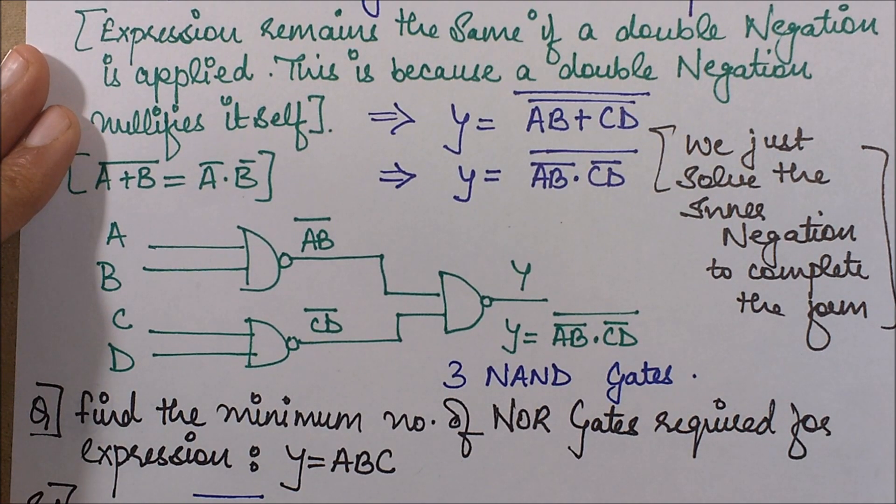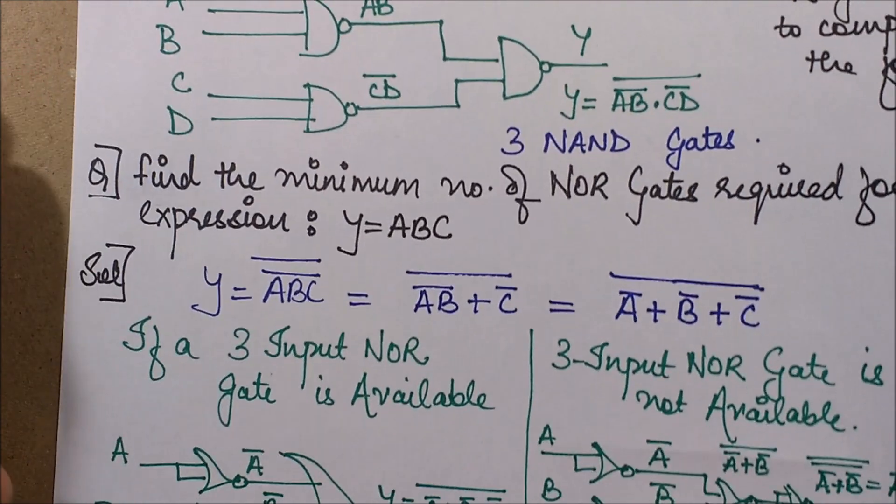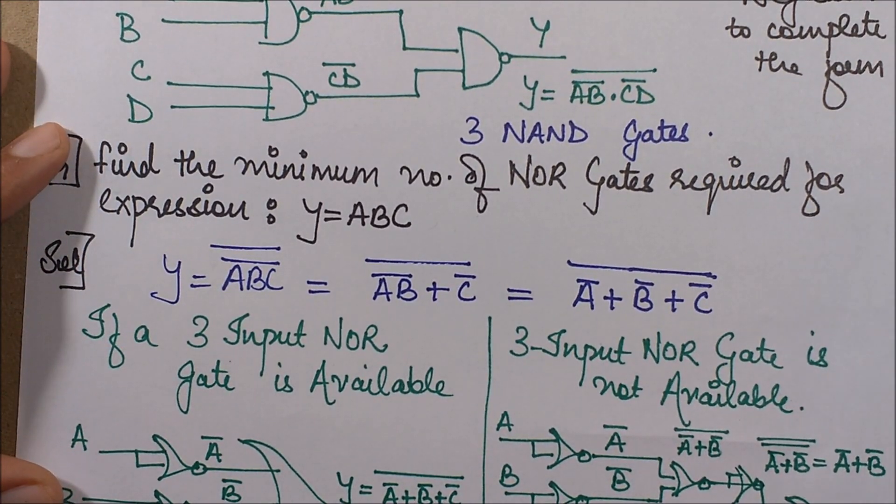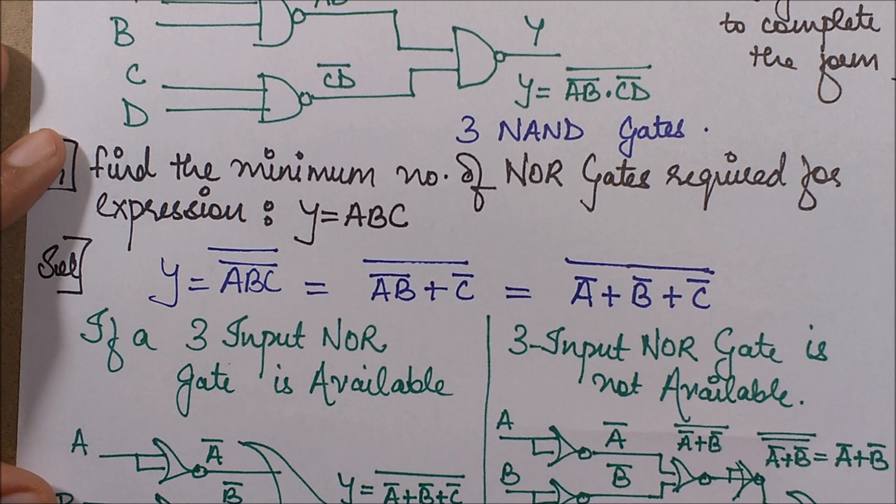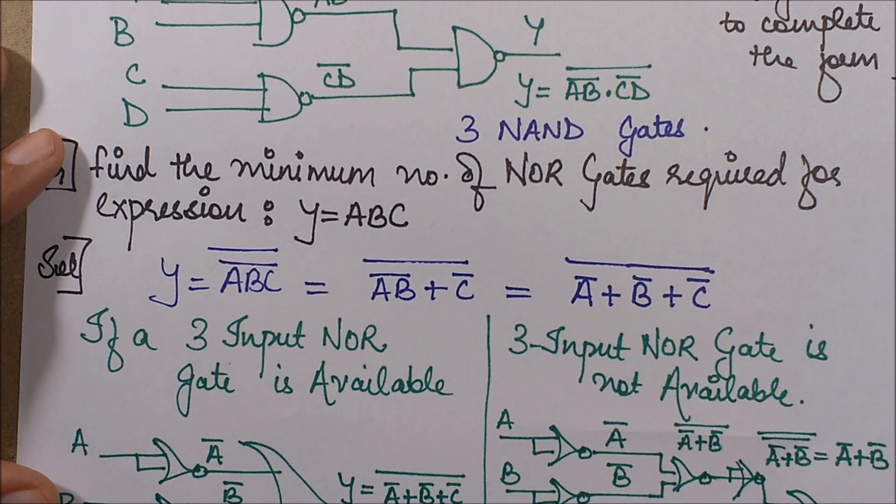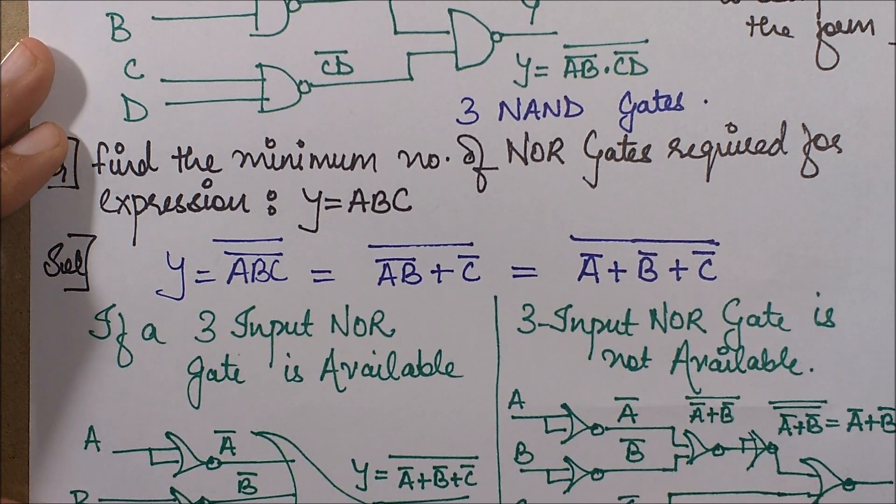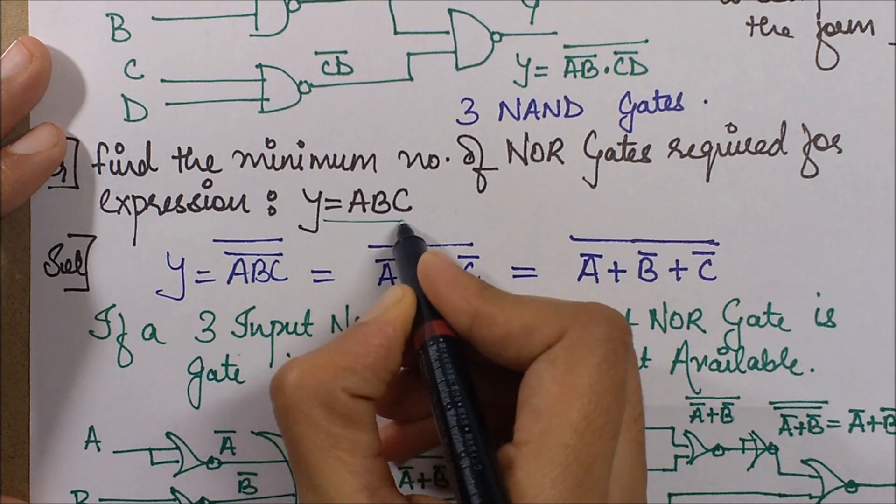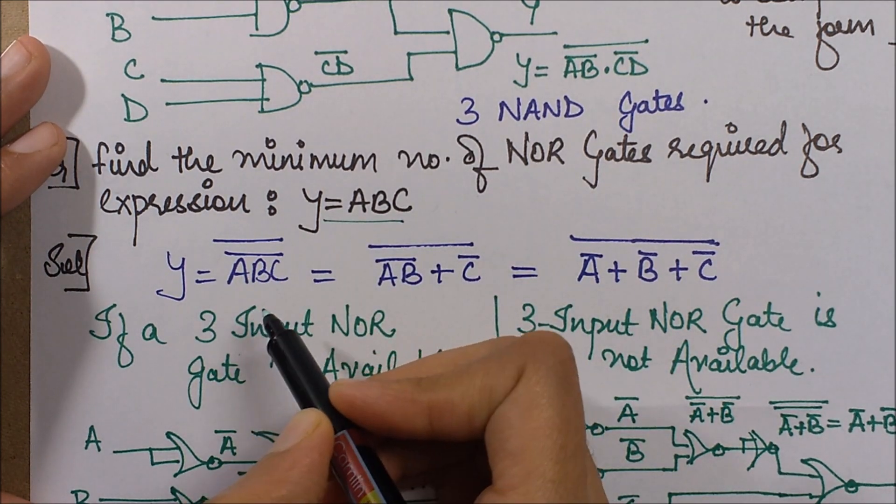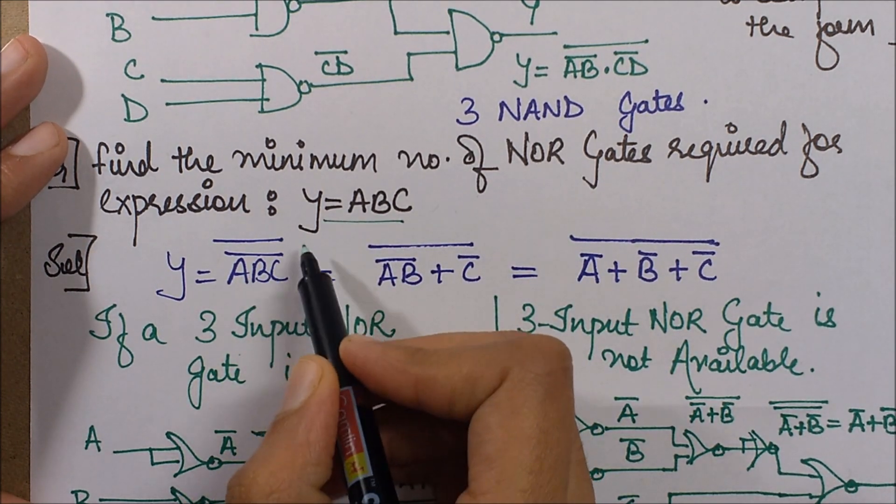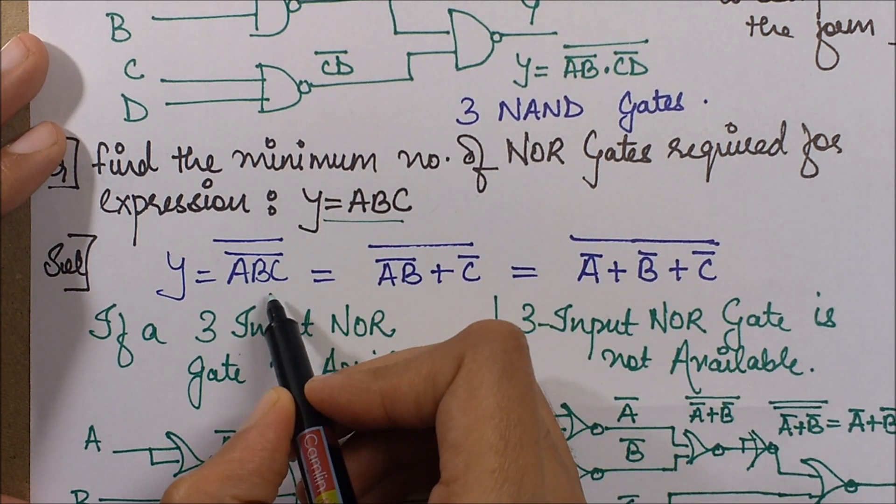The other question that I would like to discuss is about the NOR gate. In similar form now, the question can be asked in order to find the minimum number of NOR gates. So the expression over here is Y equals ABC. Now in the similar manner, I just apply a double negation.